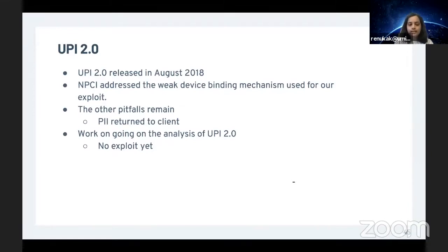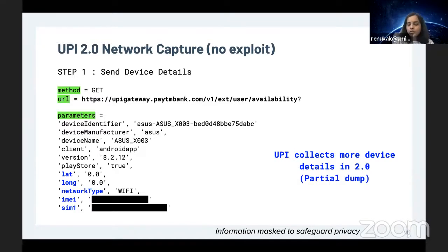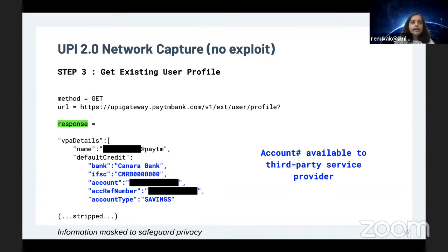We are currently exploring UPI 2.0 but have not found any exploits yet. A packet capture from Paytm as of July 2019 shows that the device details sent to the UPI server now include the user's location, network type, IMEI number, and SIM number—UPI appears to be collecting more device details in 2.0, possibly to make device binding more secure. However, when the user is verified, the user profile step of the handshake still returns complete banking information in the clear to the client, meaning account numbers and banking details are potentially available to third-party service providers, and if those providers are compromised, the implications are unknown.